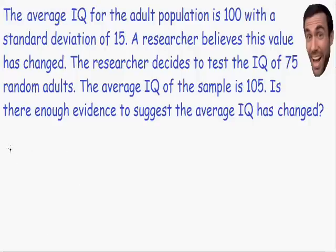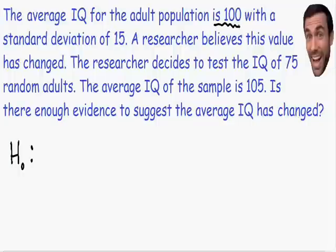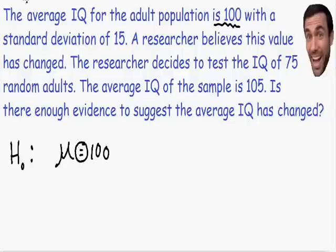Let's start with our null hypothesis. The null hypothesis is what is currently believed to be true. In this example, it says the average IQ for the adult population is 100, so the null hypothesis is that the population mean, written with the Greek letter mu, is equal to 100. The null hypothesis is always written with an equal sign — if you don't have an equal sign, you have done something wrong.